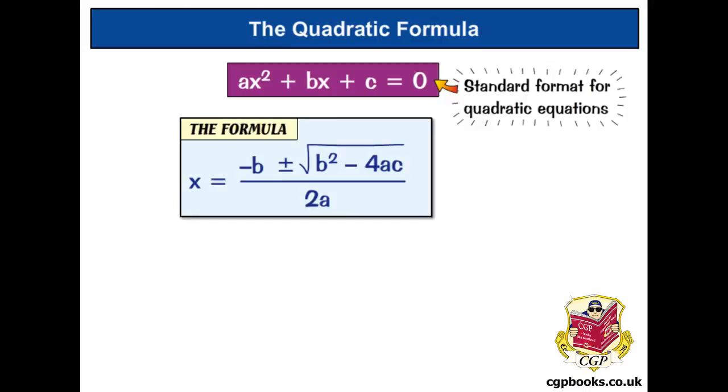x equals minus b, plus or minus the square root of b squared minus 4ac, all over 2a. Beautiful. And here's an example.